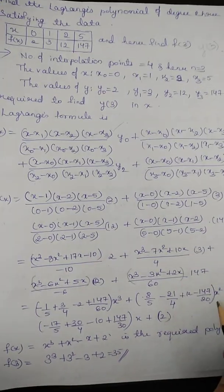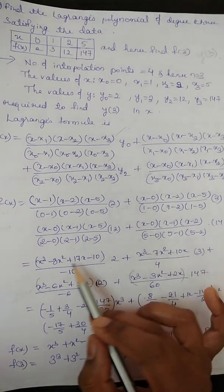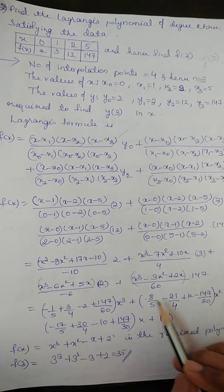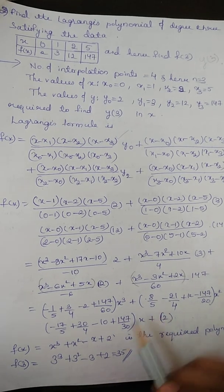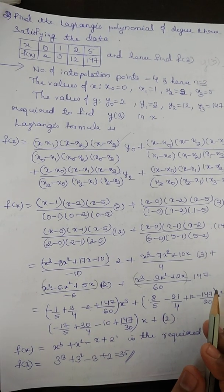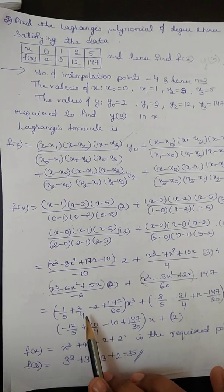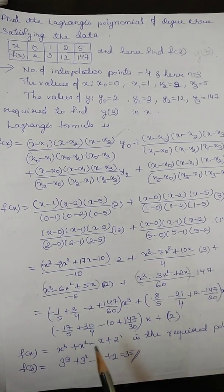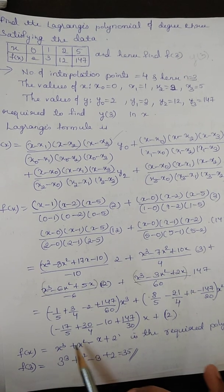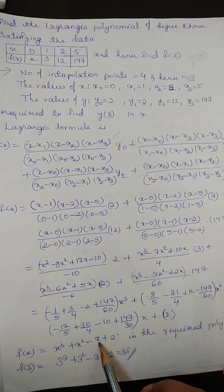Now, similarly here, x2 take common, to multiply with this, minus 8 upon minus 10, 8 by 5. So, the same way we have to follow. Then, finally, when you remove the LCM of this and simplify, we will get x3 plus x2 minus x plus 2 is the required polynomial.